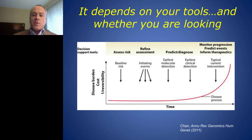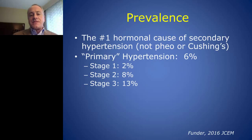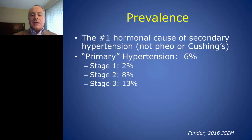We need to push our levels of detection earlier. Primary aldosteronism is actually the number one hormonal cause of secondary hypertension, as opposed to pheochromocytoma or Cushing's disease. About 6% of the primary hypertensive population has primary hyperaldosteronism. Looking by stage of hypertension, as severity increases, we see an increasing prevalence of primary hyperaldosteronism, which likely means we're catching the disease process far too late.